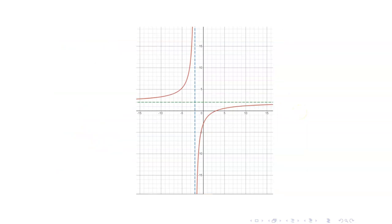That ends our lesson on graphing rational functions. The important things are to make sure you have your domain, intercepts, asymptotes, and table of signs correct so that you produce the correct graph.